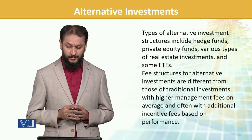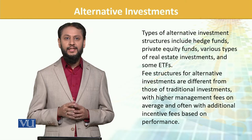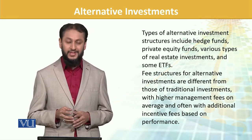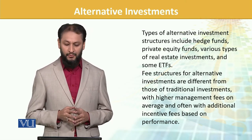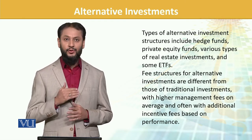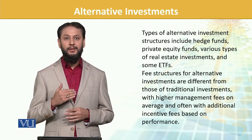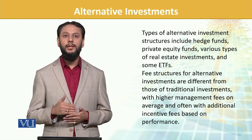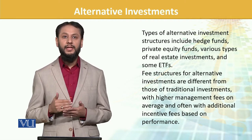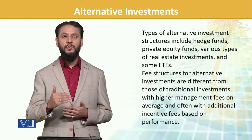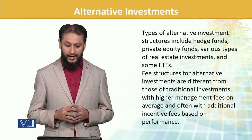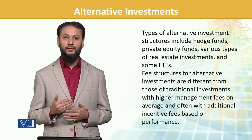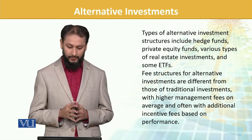Types of alternate investment structures include — ab baat karein, yeh isko apni list se compare karna hai. These include hedge funds, private equity funds, various types of real estate investments. Real estate mein bhi investment ke bhoat tariqe hoon ge. Ek direct property khareedna, aap land bhi khareed sakte hain, building bhi, apartment bhi. Then there are REITs — real estate investment trusts. And some ETFs — exchange traded funds — jo inmein invest hoon ge. Woh yeh alternative ki category mein hai.